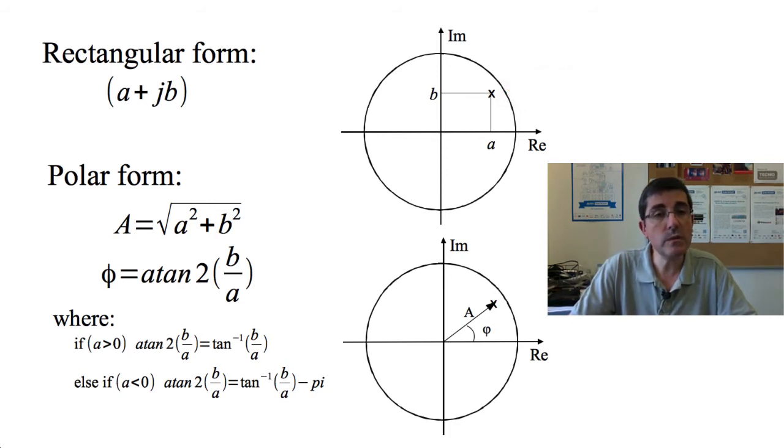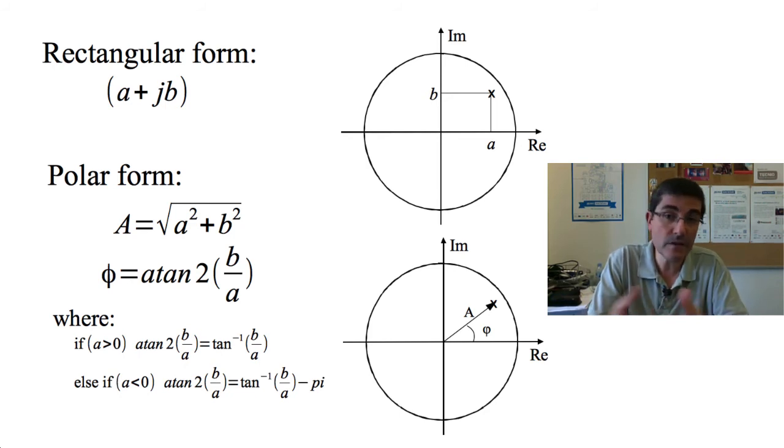In polar form, what we do is we consider this complex number, this cross, as the tip of a vector with origin at 0,0. Therefore, as a vector, it has a magnitude, which is capital A, that can be computed from a and b as the square root of the sum of the squares, and then it also has an angle, and also can be computed from a and b by computing the inverse tangent of b over a. The polar form representation makes the sum and multiplication operations of complex numbers more intuitive. For us, that will be a great advantage. And we will use the polar form representation of complex numbers and functions whenever possible.